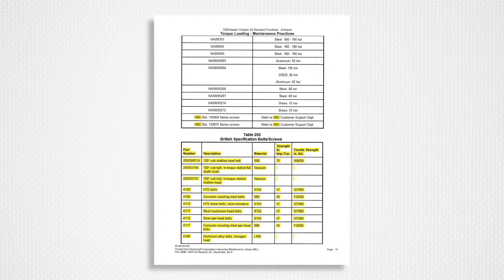For British Spec Bolts, DHS, etc., these can be found in Chapter 20 Standard Practices 20-09-20 Table 205 with their KSI rating. Again, after you have your KSI rating, you can go directly to the torque charts.